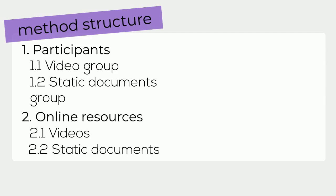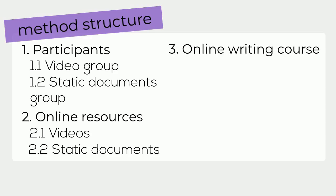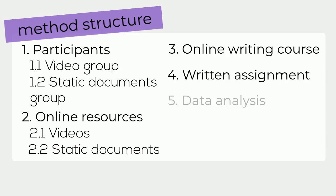We'll include information on the software used and other relevant information about how the materials were made. Moving on to the procedure, we need a section about how the online writing course took place — things like the length of the course, the amount of time that students spent studying, and other relevant information. Next, we need a section about the written assignment and how it was marked. The final section covers the data analysis, which in this case is how the assignment scores for the two groups were compared.